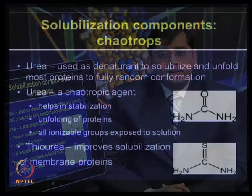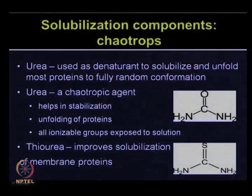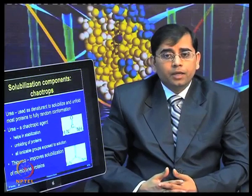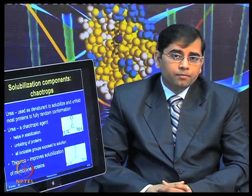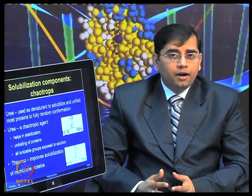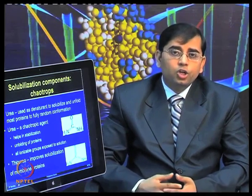First, let us talk about chaotropes: urea and thiourea. Urea is used as a denaturant which can solubilize and unfold most proteins to fully random conformations. Urea is a chaotropic agent which helps in stabilization and unfolding of proteins so that all ionizable groups are exposed to the solution. Thiourea improves solubilization of membrane proteins more specifically. Mostly, both urea and thiourea are mixed together during the solubilization step.